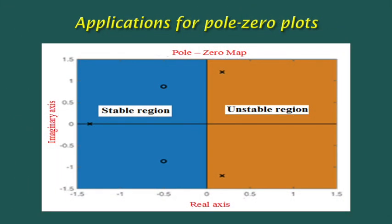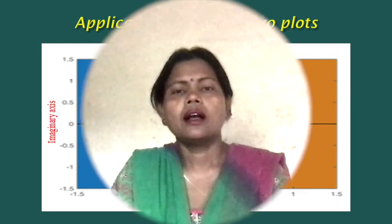Applications of pole-zero plots. As shown in the figure, the right-hand side of the S-plane is the unstable region and the left-hand side is the stable region. If any pole is present on the right-hand side of the S-plane, the system is unstable. If all poles are on the left-hand side, the system is stable. I will provide all these explanations later. The third lecture on the mathematical model of dynamic systems is coming soon. Please follow the lectures. Thank you.